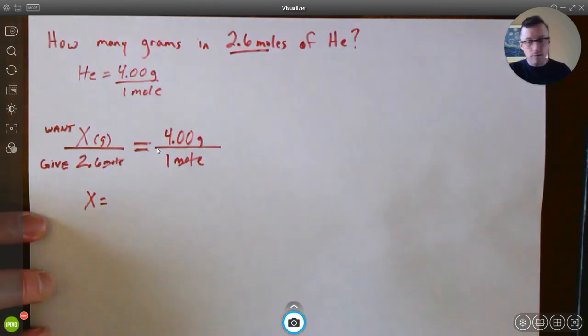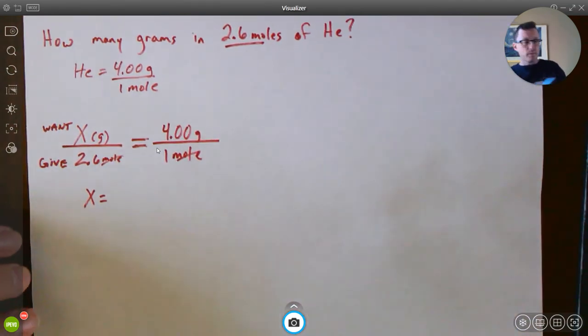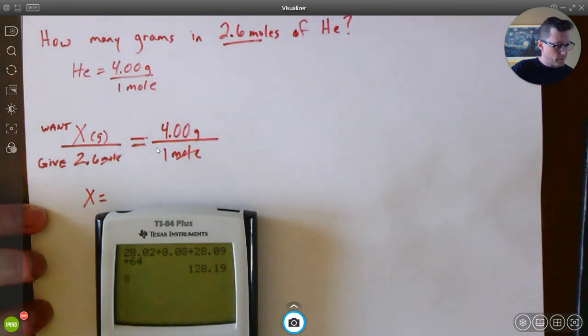You're going to get when everything cancels, the moles will cancel as a unit. You'll simply take your 4, you're going to divide it by the 1 technically, and then you multiply by your 2.6 to get the X by itself and you get 10.4.